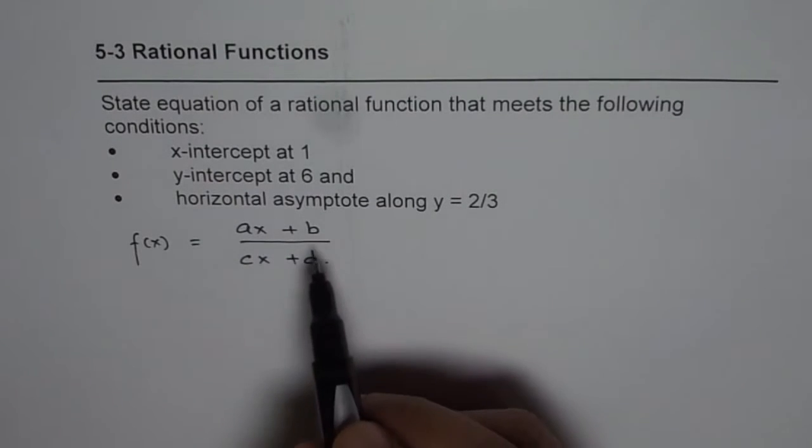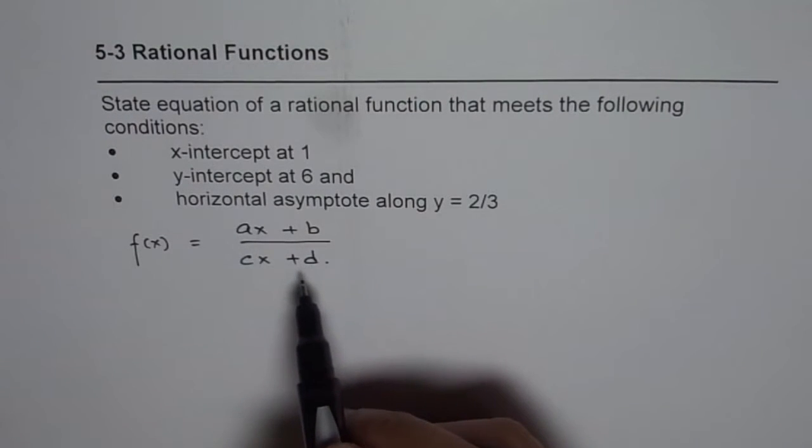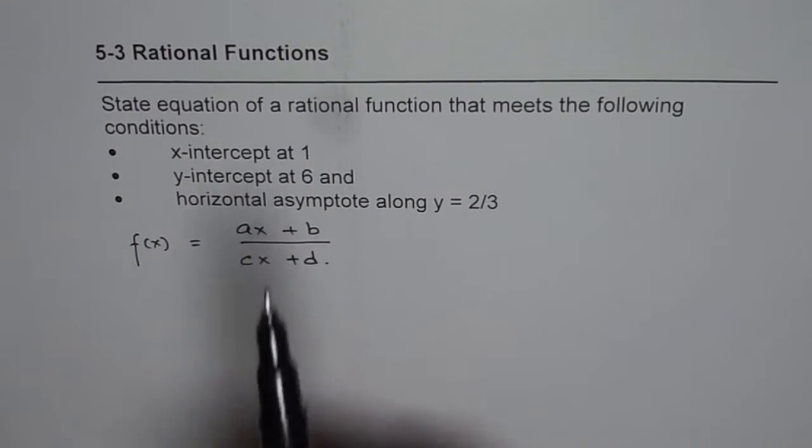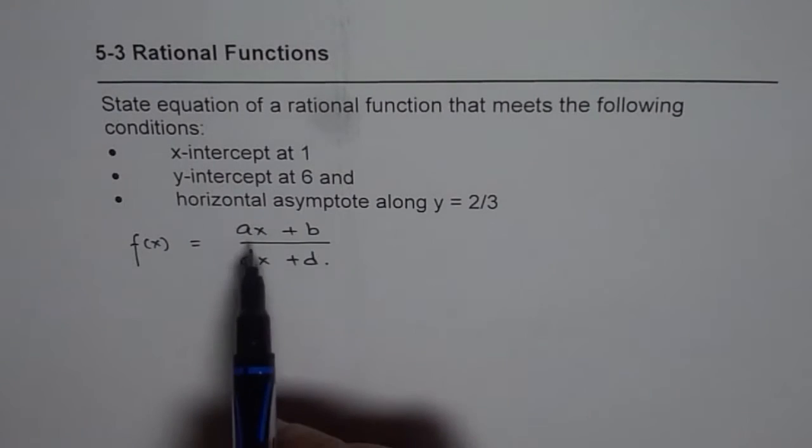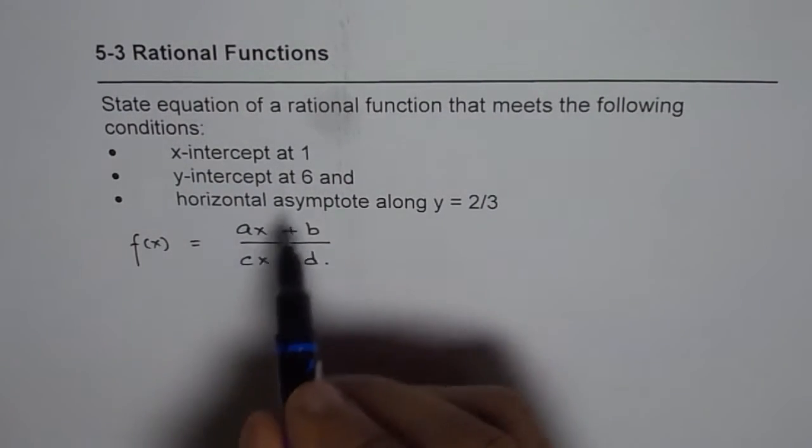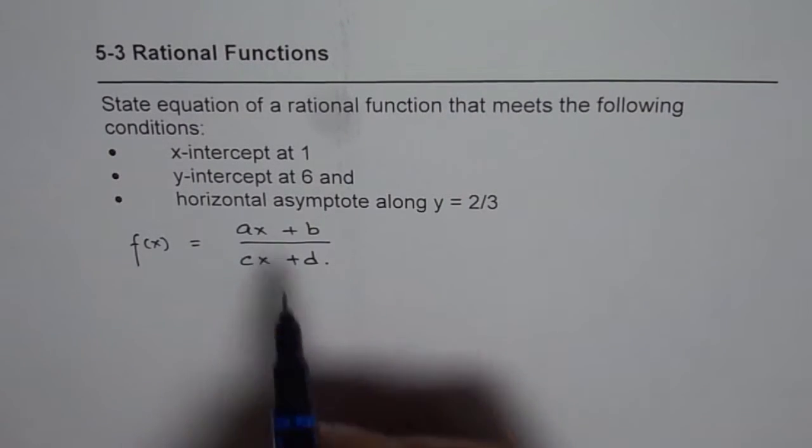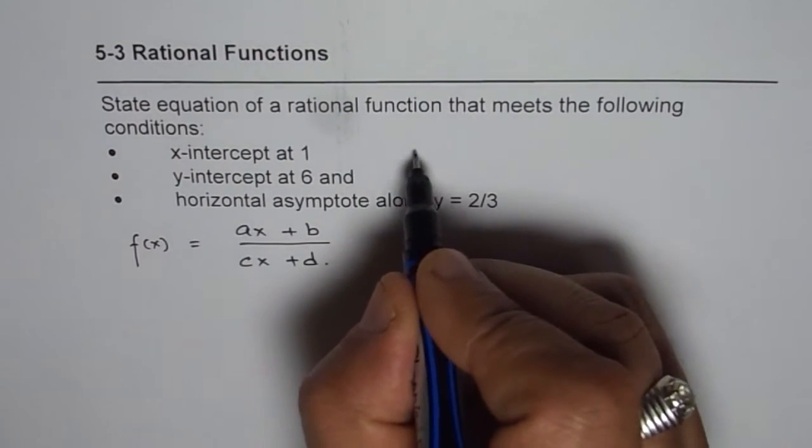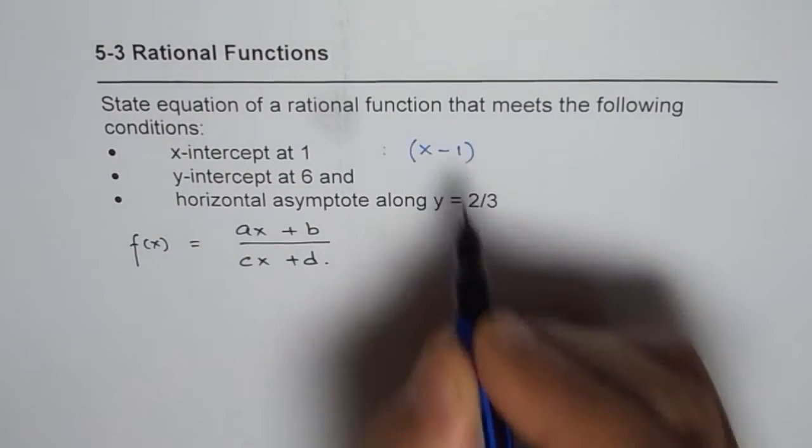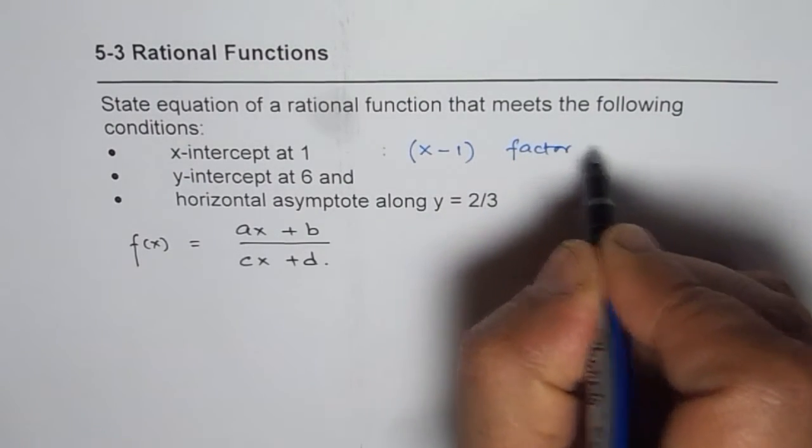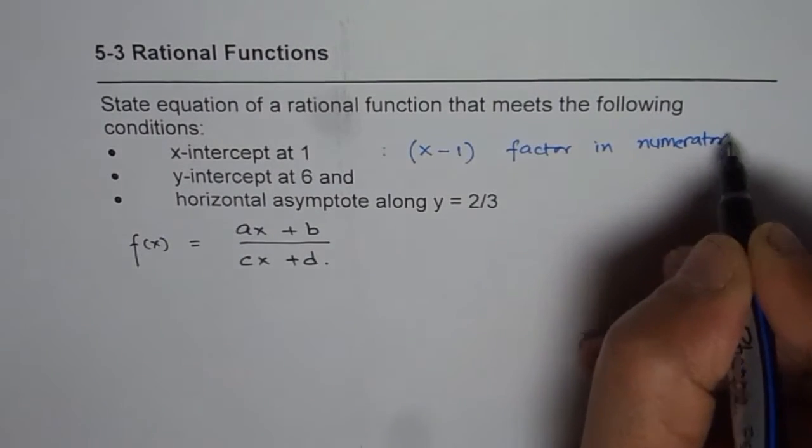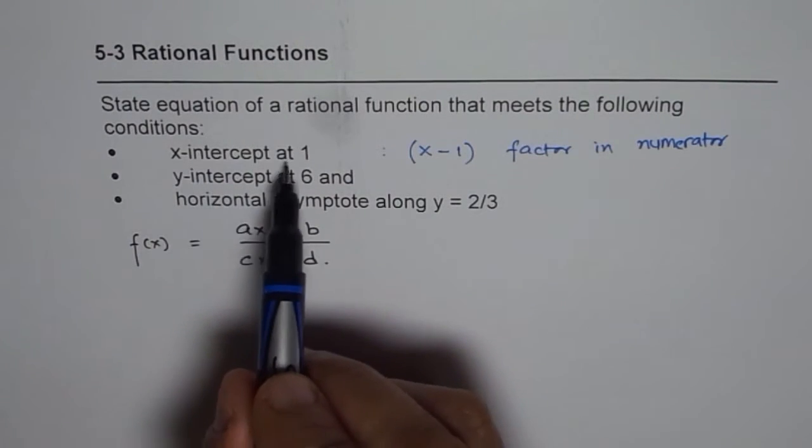Now we can use this expression to satisfy our conditions. X-intercept at 1 - what does it mean? It means that the numerator should be 0 for x equals 1. So in the numerator we have a factor which should be x minus 1.